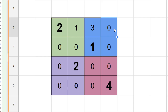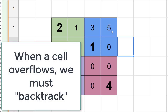Notice that three doesn't work either. When we try a four, notice that it's in the same column — that doesn't work. Then we're all the way up to five, and five is not a valid value in a four by four Sudoku board. So when we overflow a particular cell, we realize that we have gotten stuck and we need to backtrack.